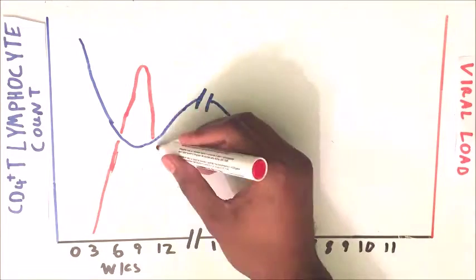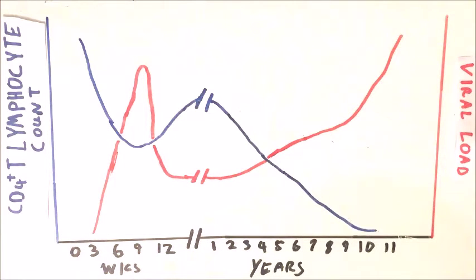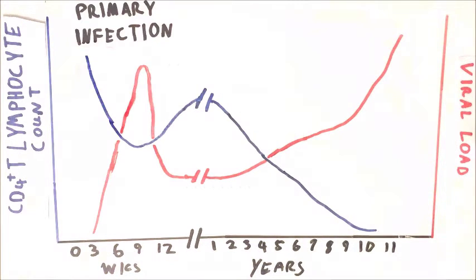So with the virus multiplying and causing the destruction of the immune cells, you can see how this can quickly become a dire situation. This graph shows the changes in the levels of CD4 cells and the viral load over time. During the primary infection, there is a massive drop in T-cells and a massive rise in the viral load.